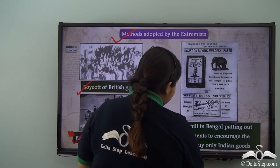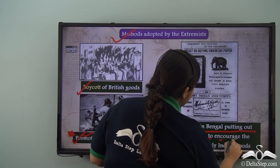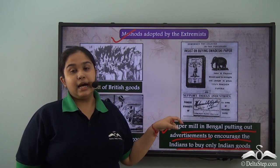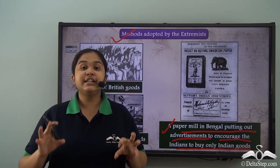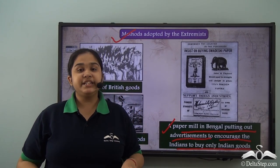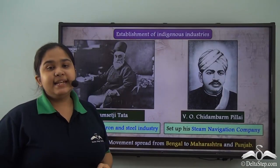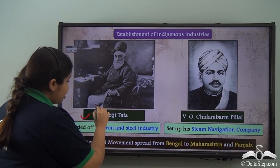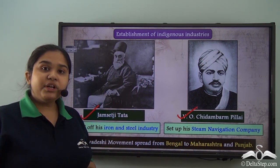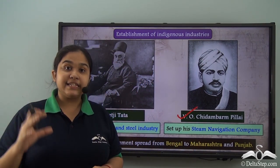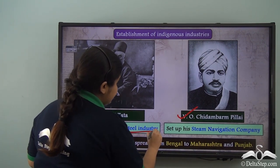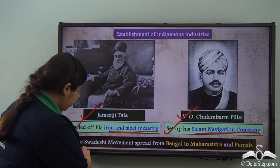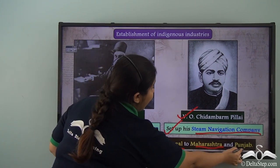Paper mills in Bengal put out advertisements encouraging Indians to buy only Indian goods, and such posters were displayed all around India to promote Swadeshi and boycott as vigorous programs against the British. Various indigenous industries were established — Jamshedji Tata started his iron and steel industry, and V.O. Chidambaram Pillai set up his steam navigation company. The Swadeshi movement spread from Bengal to Maharashtra and Punjab.